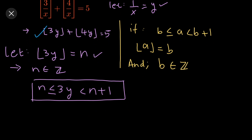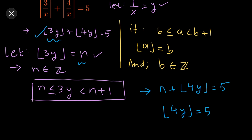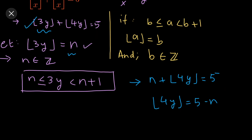We replace floor(3y) with n in the equation, so it becomes n + floor(4y) = 5. Subtracting n from both sides gives floor(4y) = 5 − n. Since n is an integer, 5 − n is also an integer, so this equation is consistent. This means 4y must lie in the interval [5−n, 6−n).